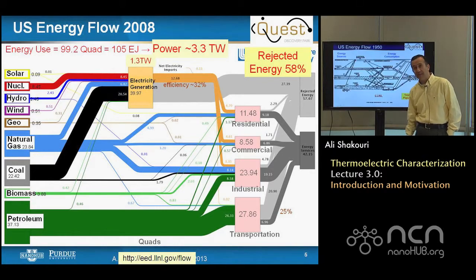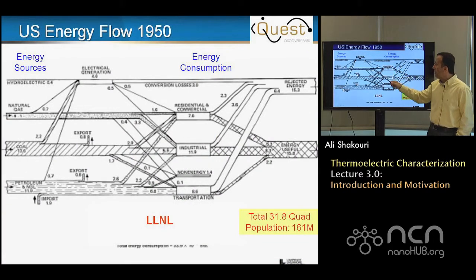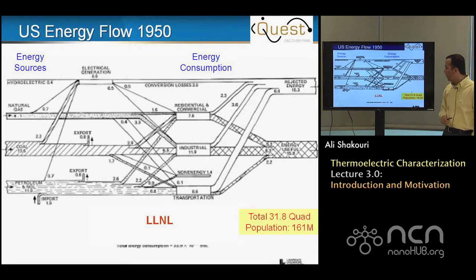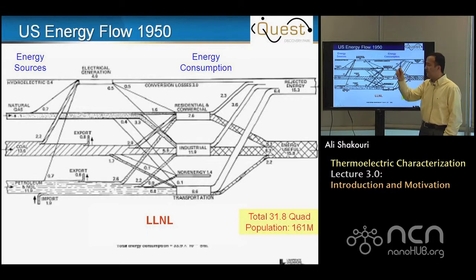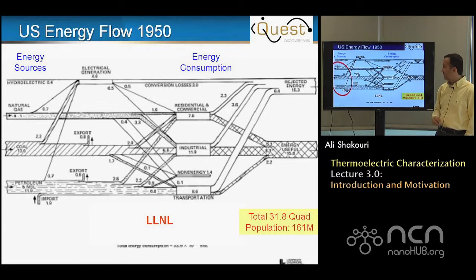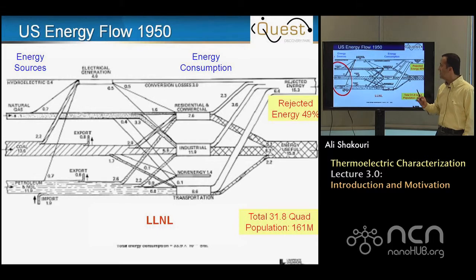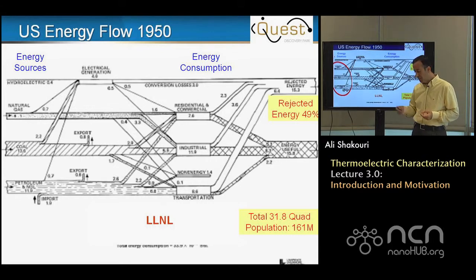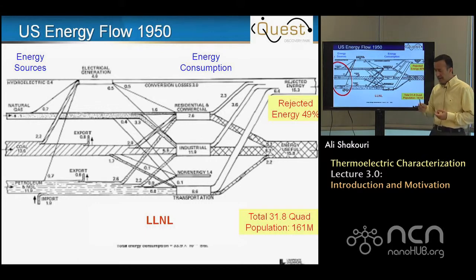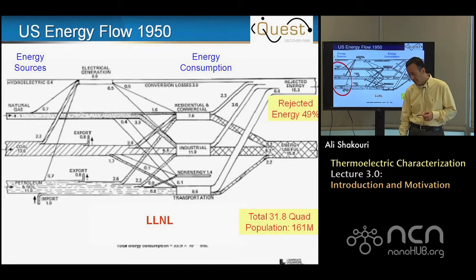For a historical comparison, this is U.S. energy flow in 1950. At the time, the population of the U.S. was almost half of today, but energy consumption was about one-third of today. Per capita energy consumption since 1950 has gone up. At the time, 99 percent of sources came from fossil sources because there was no nuclear. What is surprising is that rejected energy at the time was 49 percent. So the overall efficiency of energy flow in the economy is actually worse today. That's something discussed in the homework problems — why does this happen while every technique has improved?